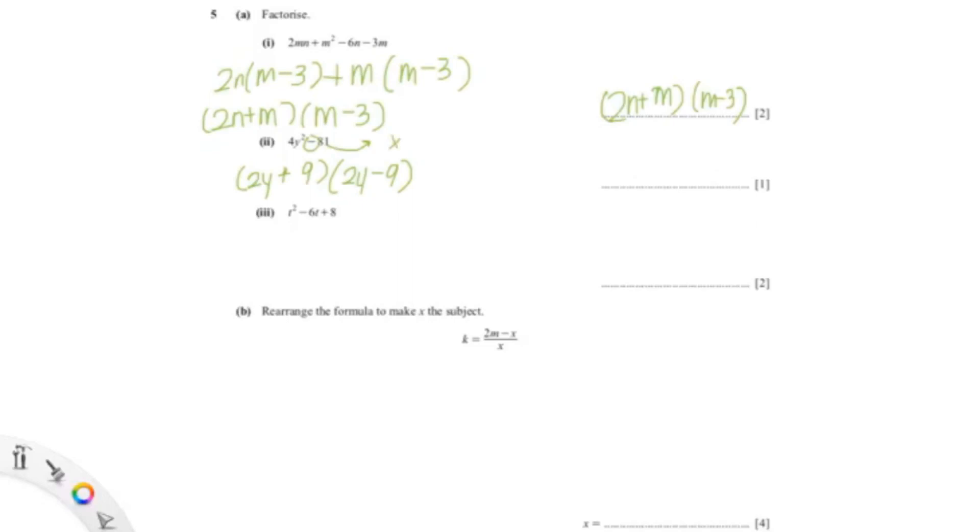And because it's minus, it means opposite signs should times each other. So it's only plus and minus. So the answer is 2y-9.